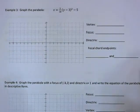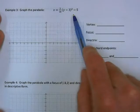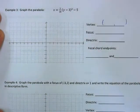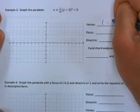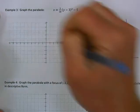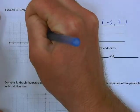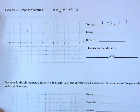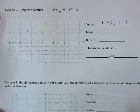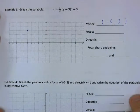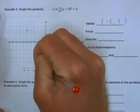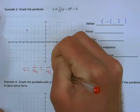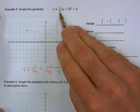Example 3: graph the parabola. This one is already in descriptive form. The vertex — be careful, since it's x =, the y value is 3 and x value is -5 when y is 3. So vertex is at (-5, 3). Plot that and then find the focal length for focus, directrix, and focal chord endpoints using c = 1/(4a). Our a value here is 1/18.